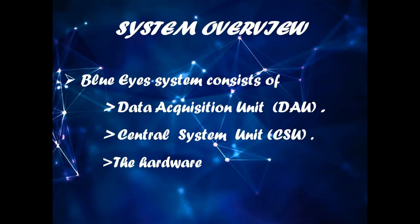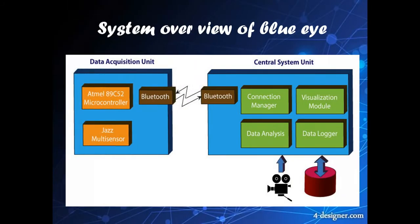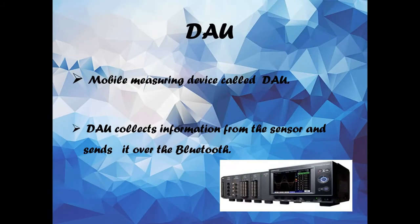Blue-Eye technology consists of three parts: data acquisition unit, central system unit, and hardware. The Bluetooth module, integrated with the mobile phone, provides a wireless interface between the CSU and the user or operator. The device uses a 5-key keyboard, beeper, and LCD display for interaction with the operators.